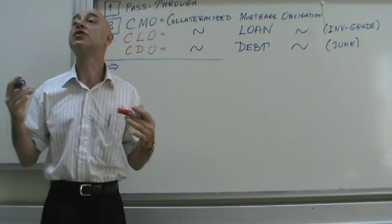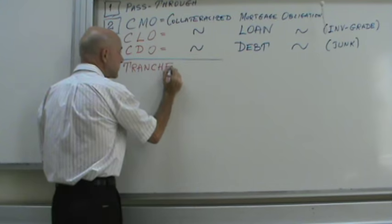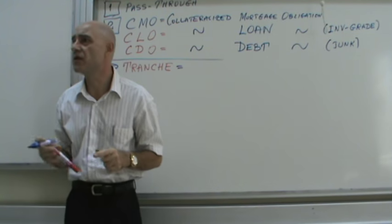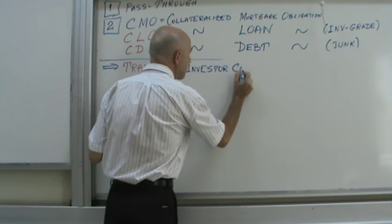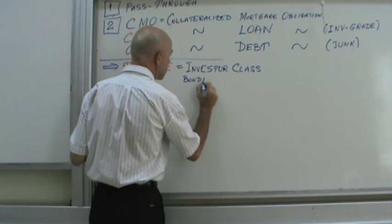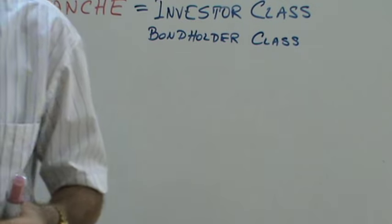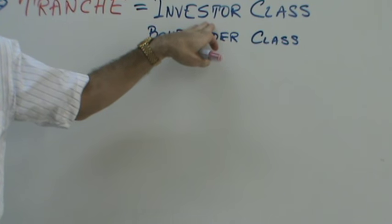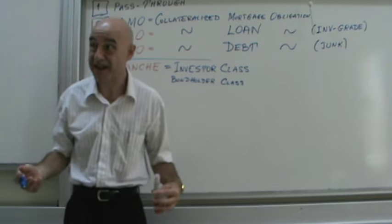The first key concept to understand is that a CMO has tranches. Tranche is a French word; the legal financial term is called investor class.